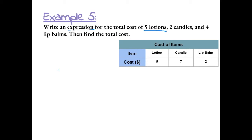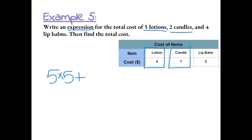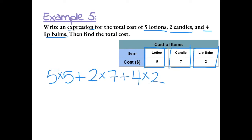If we're getting five lotions, the table tells us that lotions cost five dollars each. So we would multiply five times five to find the cost of the lotions. Plus, we're getting two candles that cost seven dollars each, so two times seven. Plus four lip balms that cost two dollars each, so four times two. This would be the expression we use to find the total cost.